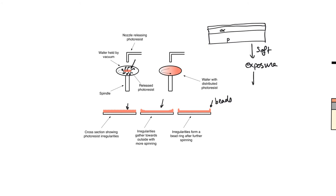Then we do an intermediate bake, which is done before development. This intermediate bake is required because it helps the photoresist attach to the wafer properly. The rate at which the photoresist dissolves in the development liquid will depend on how solid it is — we cannot make it too solid, otherwise it won't dissolve in the developer.